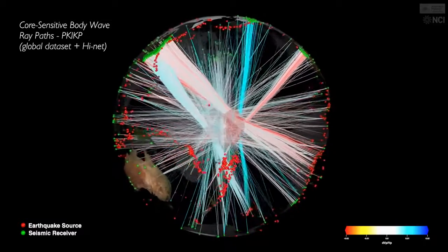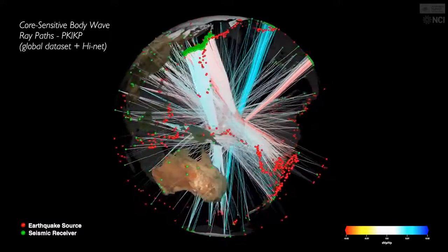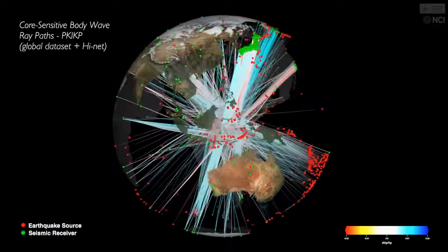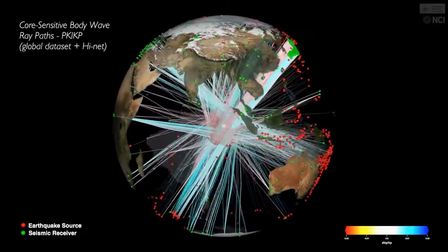We concentrate on the waveforms between 3 and 10 hours after large earthquakes. The green dots are receivers on the surface of the planet and the red dots are large earthquakes. It's like a fingerprint of the Earth.